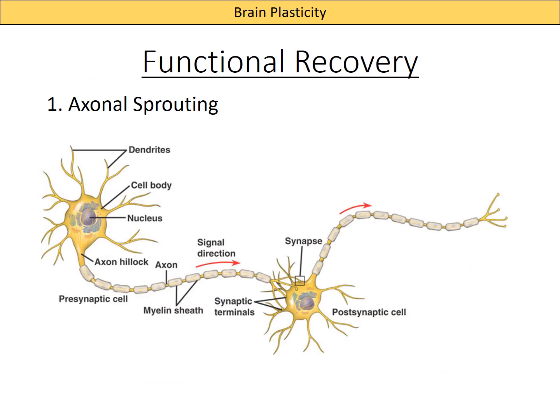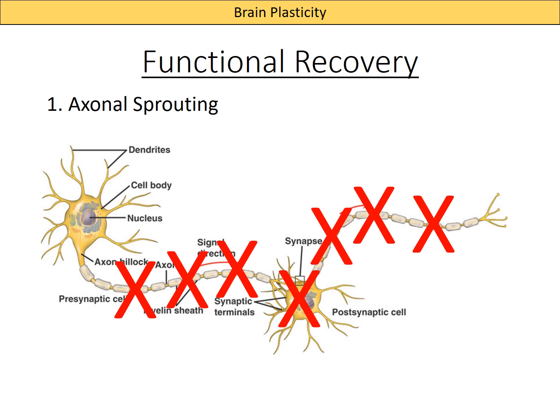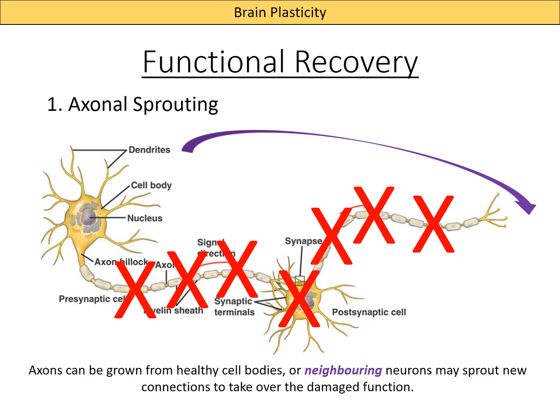After brain damage, one of the ways you can help recovery is through axonal sprouting. If we imagine one series of neurons within the brain where the axon, cell body, and next axon have been damaged in some way — axonal sprouting, remember the axon is the long tube-like bit that relays the message, is when new axons are grown. If a cell body is healthy it can sprout new axons, and if it's not, neighboring neurons might sprout new connections to take over the damaged function. It's a bit like if you need to get from place A to place B and some roads have been closed — you just find a way around.